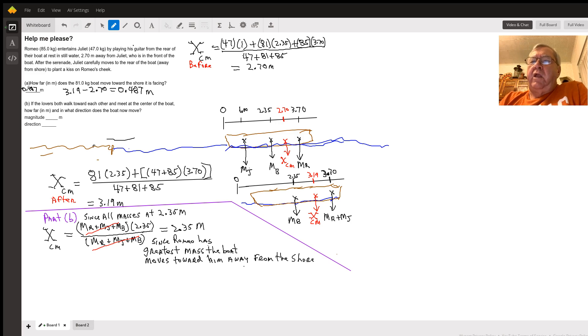For the system we come up with 3.19. You take the difference to get how much the boat moved towards the shore, which was 0.487 meters. In part B, when they meet together in the middle of the boat, all the masses...